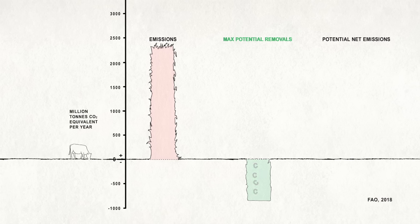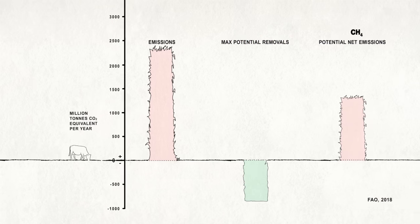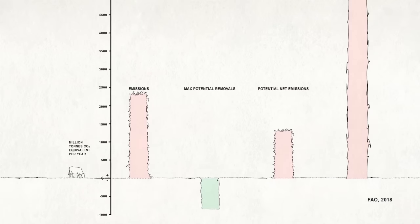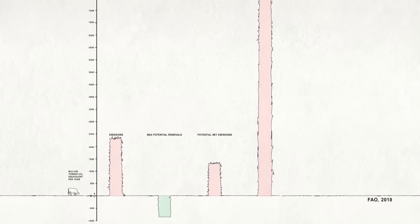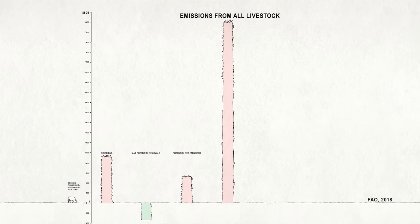The research found that even if the sequestration potential from grazing were maximized at the global level, grazing livestock would still be a net contributor to the climate problem and that the reduction in emissions that this could deliver would be small when compared to total emissions from the livestock sector.